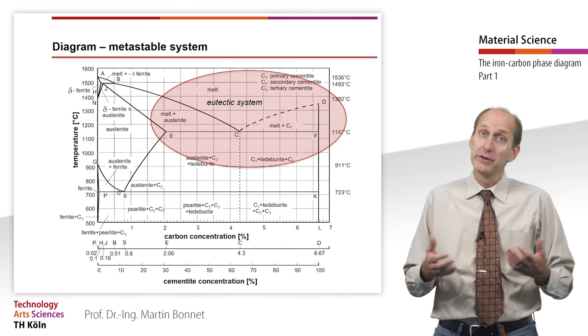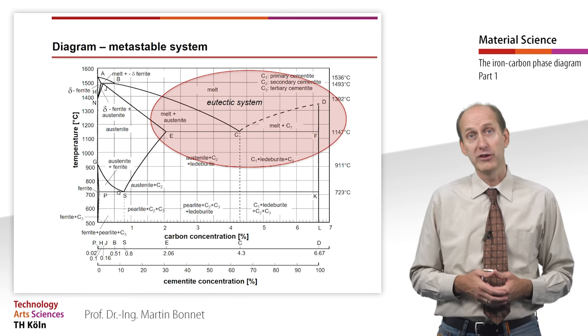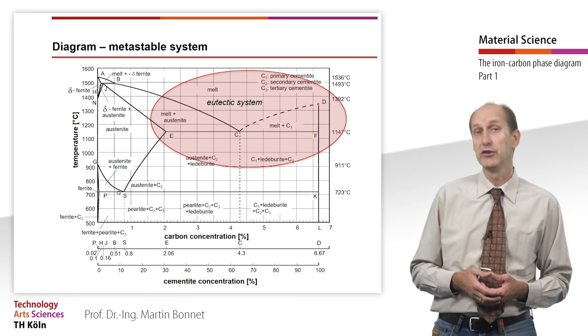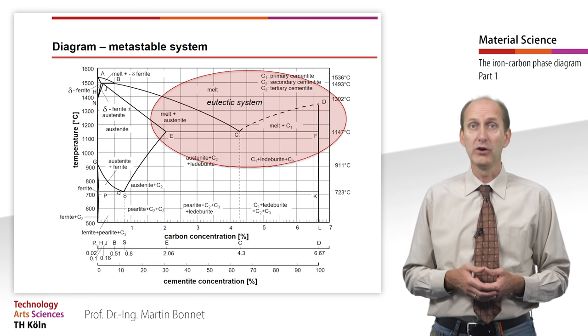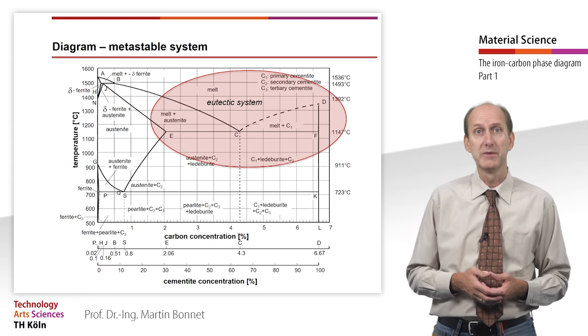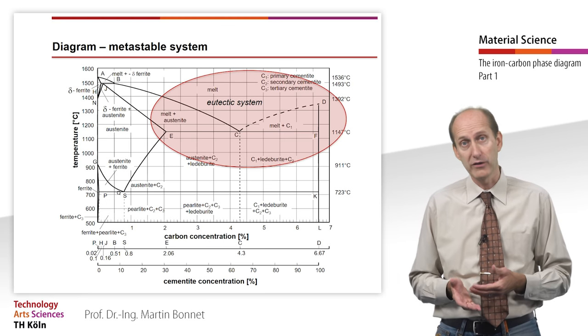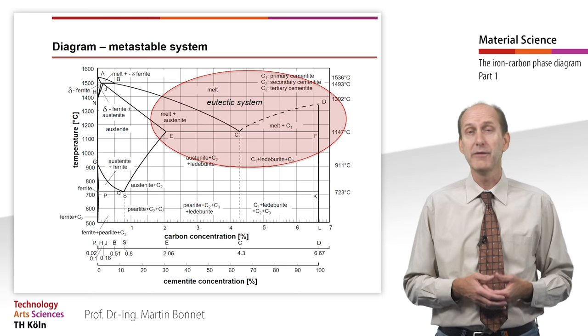We have already heard that the gamma solid solution is also called austenite and that the alpha solid solution is referred to as ferrite. But also the structural constituents resulting from the three phases austenite, ferrite and cementite have their own names.